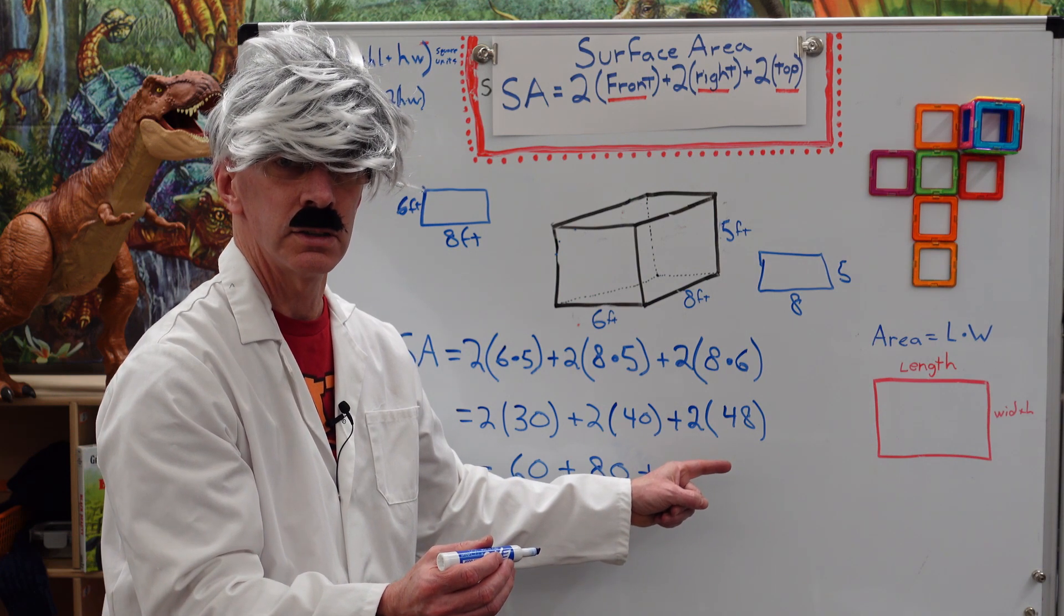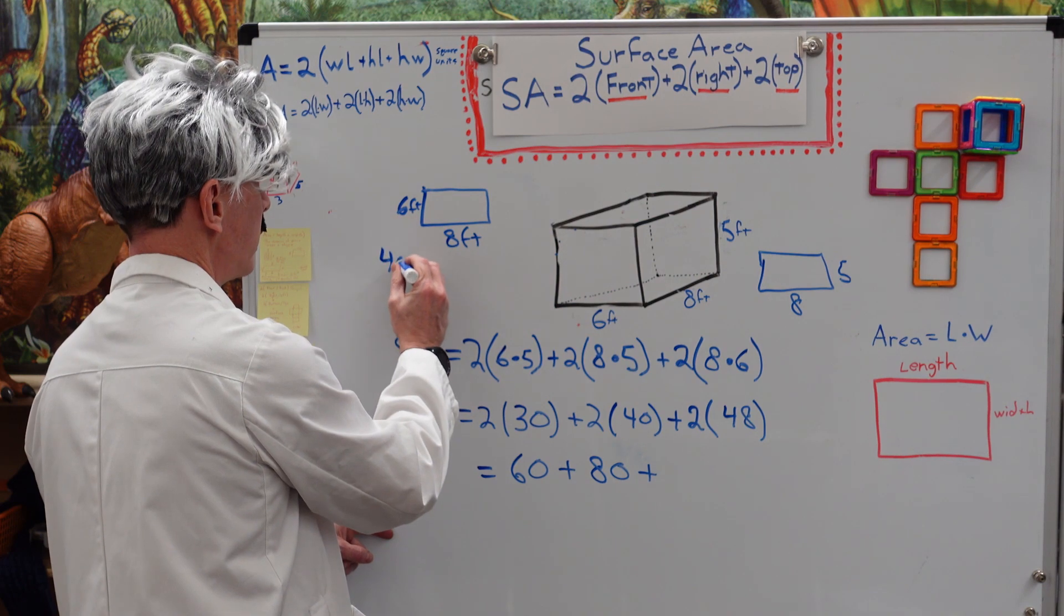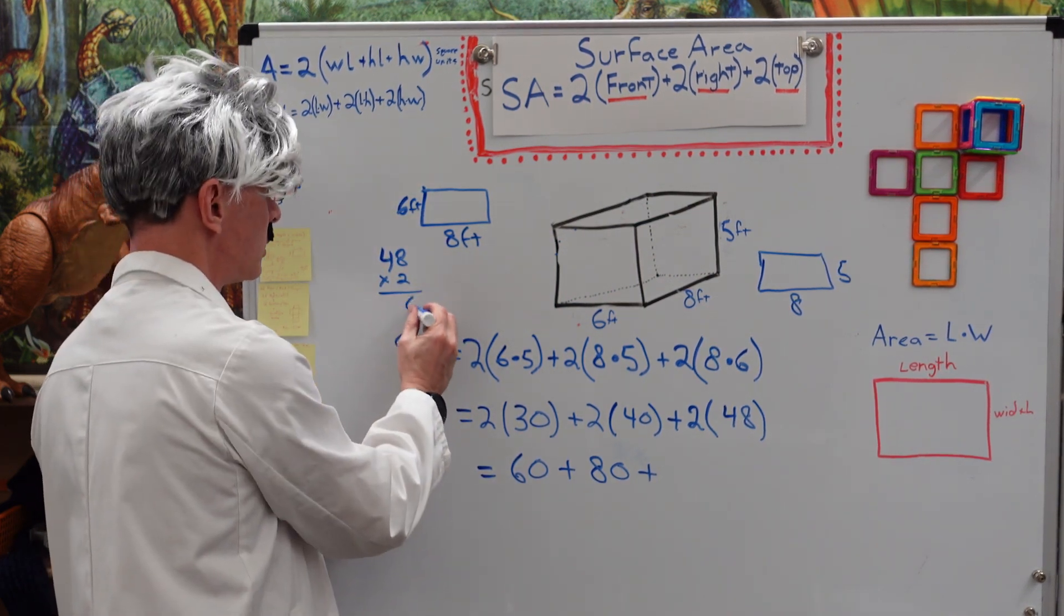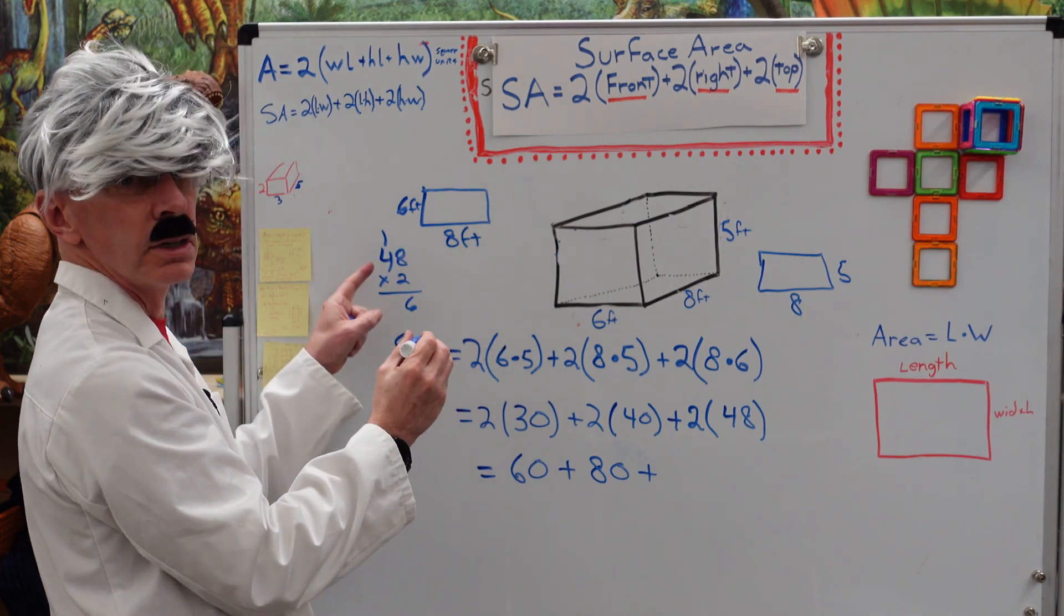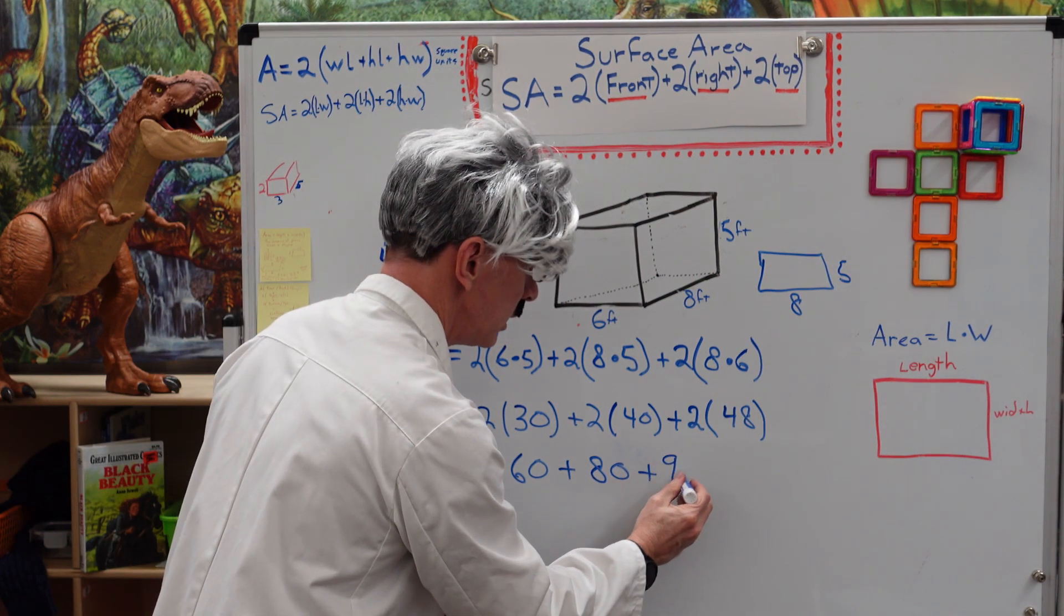Do you know what 2 times 48 is? Me neither. We better figure this out. So, I take 48 times 2. 8 times 2 is 16. Carry the 1. 2 times 4 is 8. Plus the 1 is 9. 96.